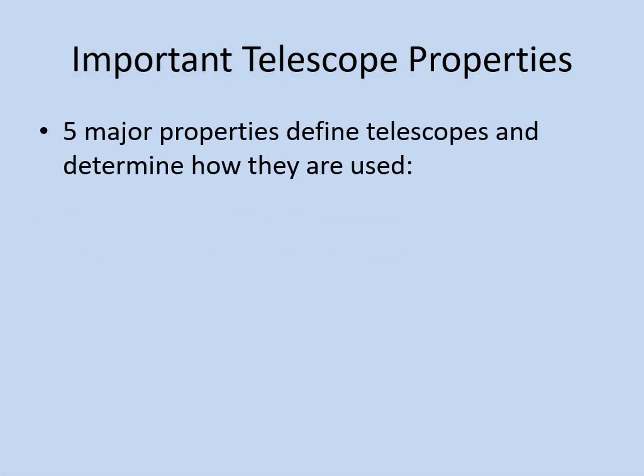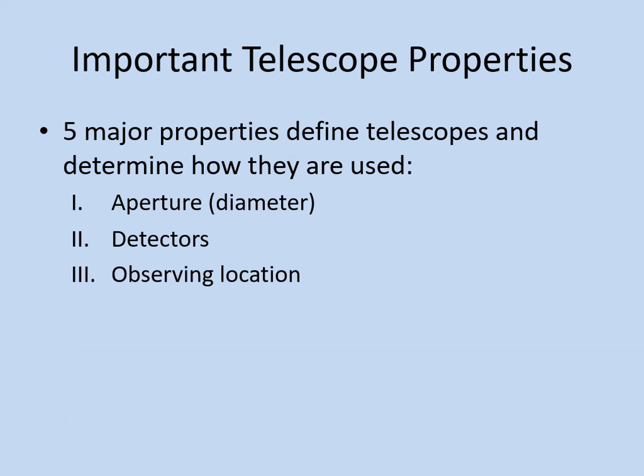There are five major properties of a telescope that determine how it functions and what we can observe with it. These properties are: first, aperture, which is the diameter of the telescope; second, the detectors on the telescope; third, where the telescope is located; fourth, the range of wavelengths it can observe in; and fifth, the field of view, or how much of the sky can be observed at one time.